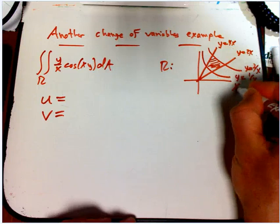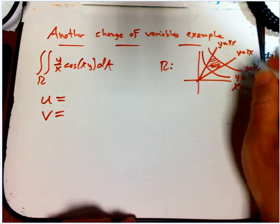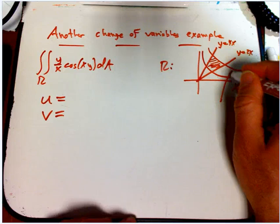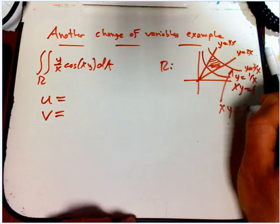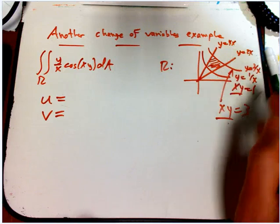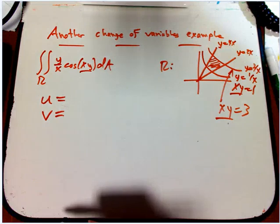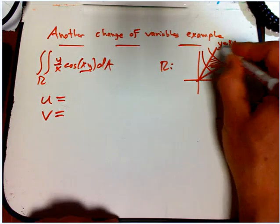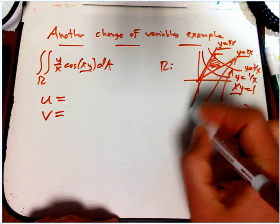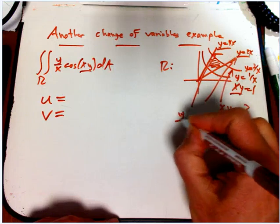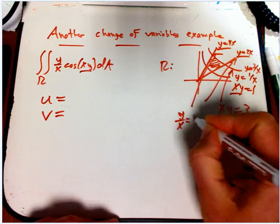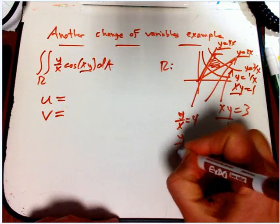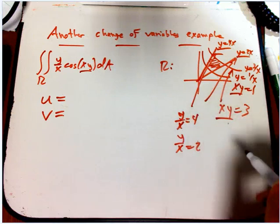This can be expressed as xy equals 1. This guy can be expressed as xy equals 3. So that xy combination is showing up twice there and also in the integrand. These guys could be expressed as y over x equals 4 and y over x equals 2.